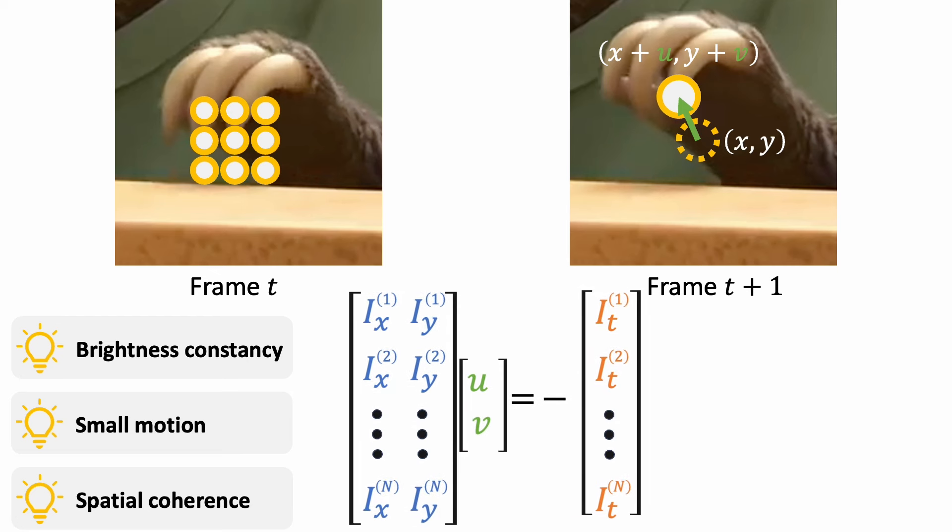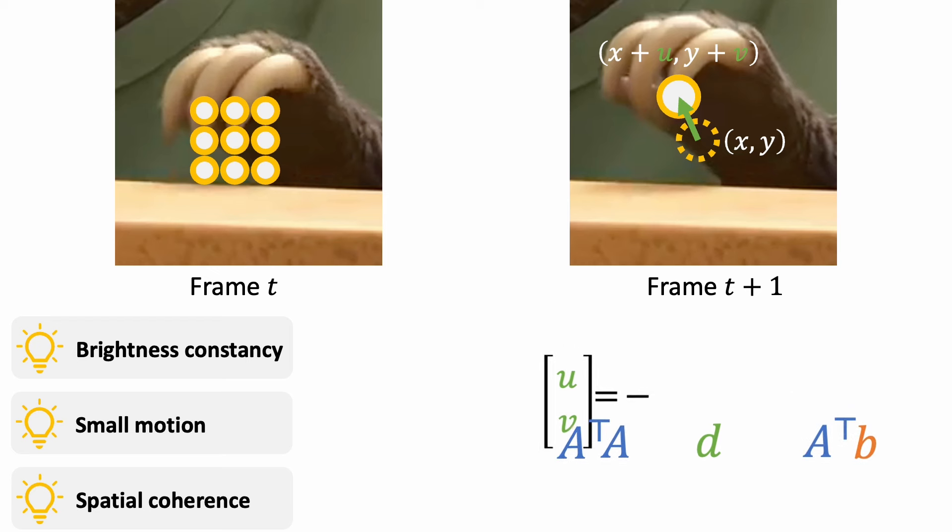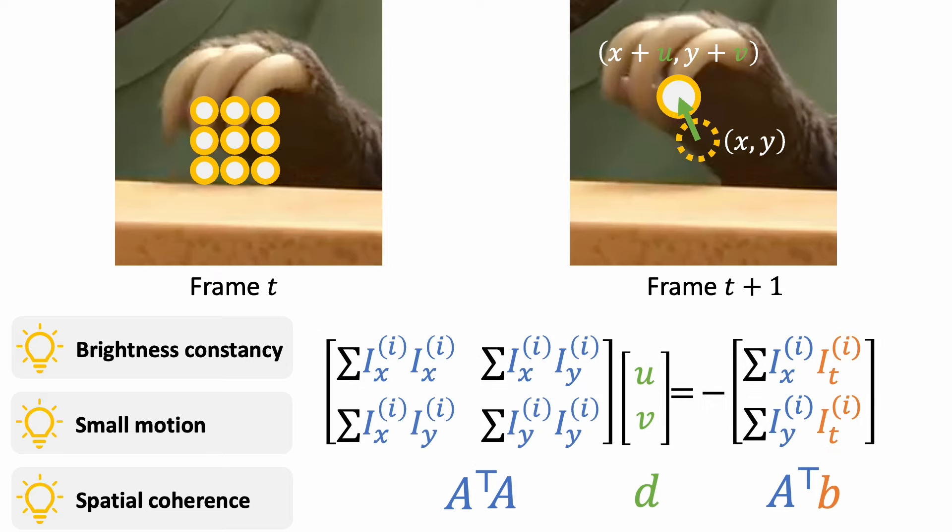Let's rewrite these equations compactly using matrix representation. This is an overdetermined system because we have more equations than the number of unknowns. Applying the A transpose on both sides leads to a normal equation. We can now compute the motion as the least square solution to this overdetermined system.